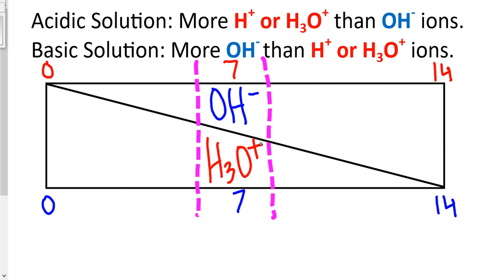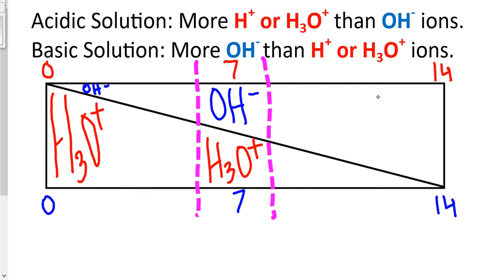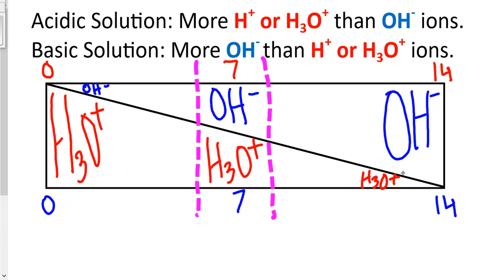When a solution has a pH of 0 or anything below 7, it has more hydronium ions compared to hydroxide ions. The opposite is true for a solution with a pH of 14 — it has more hydroxide ions than hydronium ions. When the pH is 0: more hydronium than hydroxide. When it's neutral at 7: equal numbers. When it's 14: more hydroxide than hydronium.